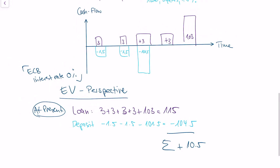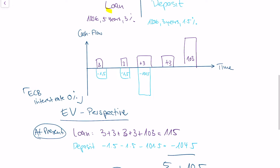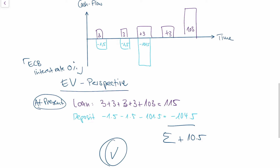When it comes to the EV perspective, everything is fine. Our balance sheet has a positive value, meaning if our bank is in distress or has financial problems, they can sell off all their assets and actually make a profit. The EV perspective tells us this is rather good — we have higher interest rates on the asset side than on the liability side, meaning the bank makes profits.